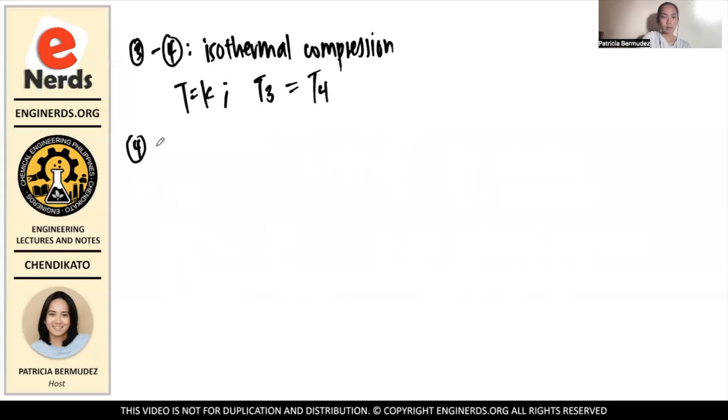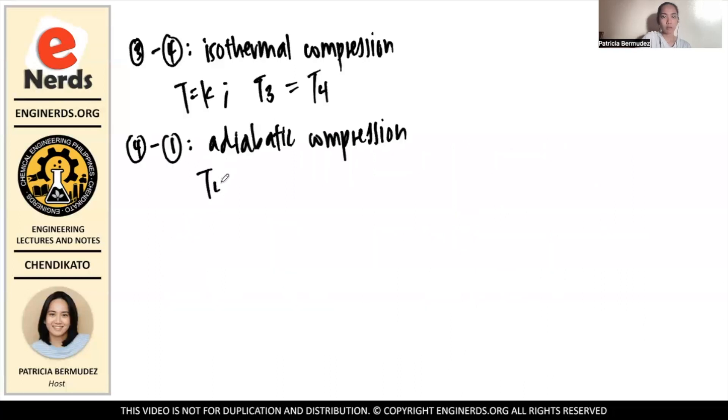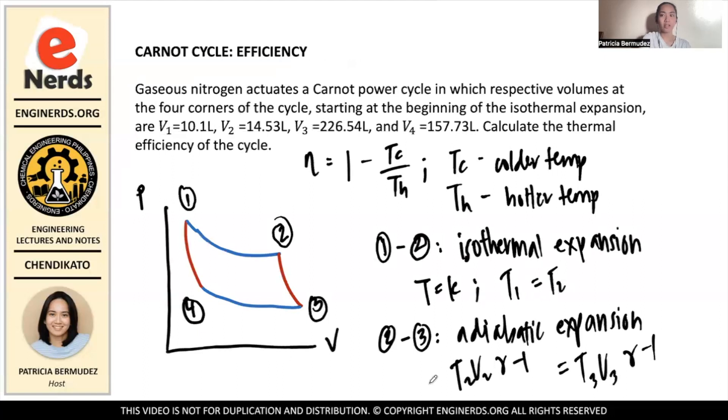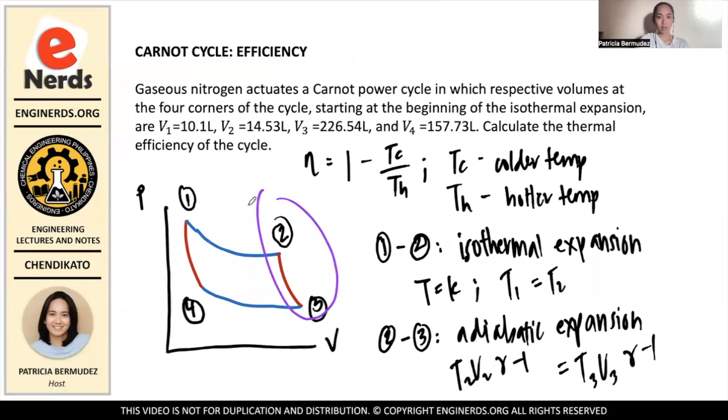And then finally, it goes through an adiabatic compression. And in here, we also relate temperature and volume, but at points four and one. So we know that T4V4^(γ-1) = T1V1^(γ-1). So we now know what we'll be using. What relates temperature and volume in this cycle? It's two to three and one to four. And what will we use? This, as well as this.